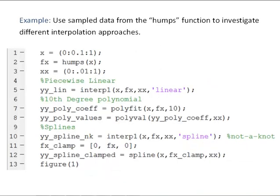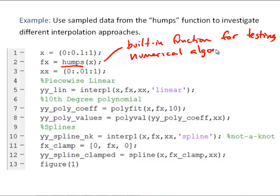So let's look at an example MATLAB script to investigate these different approaches. And in this script what I'm going to do is use sample data from the MATLAB Humps function. And this is a built-in function. And it's there in MATLAB basically for testing numerical algorithms and how they behave with this function. And we'll look at it here in a minute and I'll talk about why it's there. And so I'm going to generate sample data f of x at points from 0 to 1 on an interval of 0.1 and use those to interpolate to a finer data spacing of 0.01.